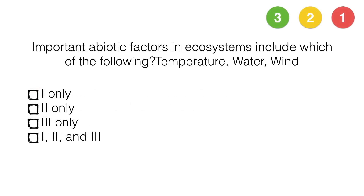Important abiotic factors in an ecosystem include which of the following? Temperature, water, wind. Only one, two only, three only, or one, two and three?